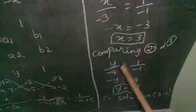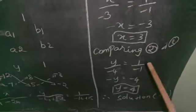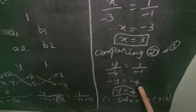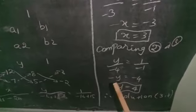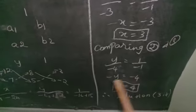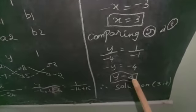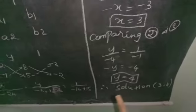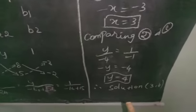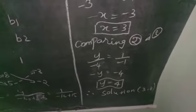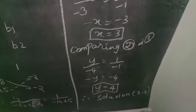Comparing the second and third terms: y divided by minus 4 is equal to 1 divided by minus 1. Therefore, minus y is equal to minus 4. Cancelling the minus on both sides, we get y is equal to 4. Therefore, the solution is (3, 4) — x value is 3 and y value is 4.